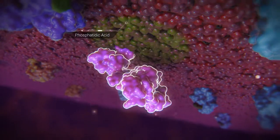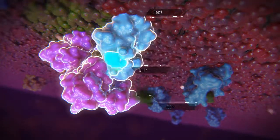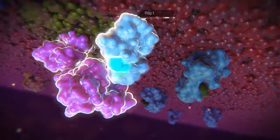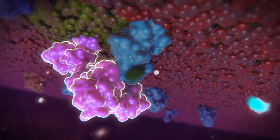This triggers the translocation and binding of EPAC to phosphatidic acid at the plasma membrane, where it activates membrane-bound RAP1 by exchanging GDP for GTP.